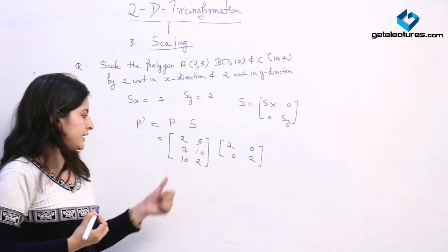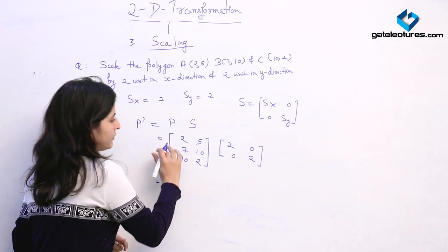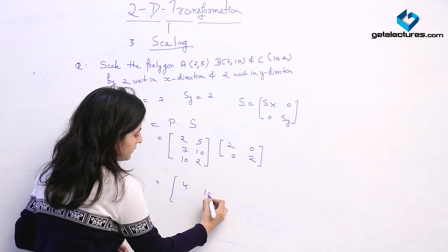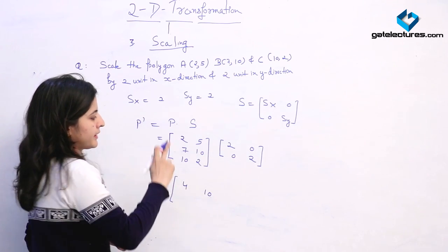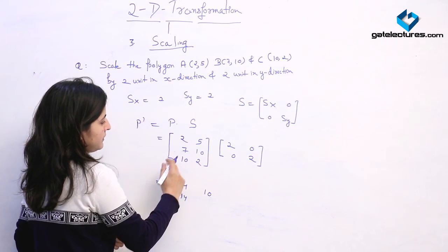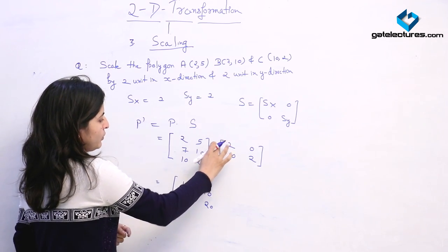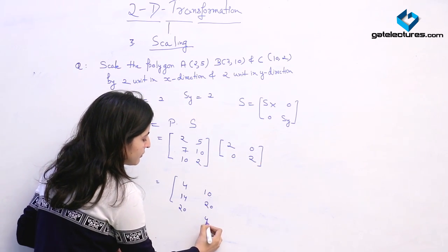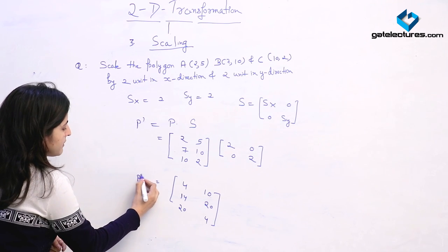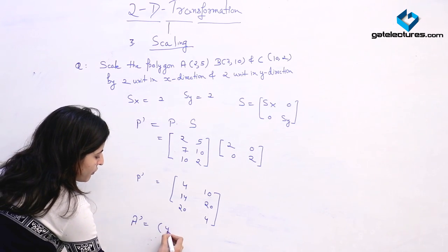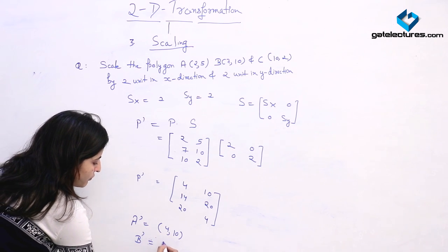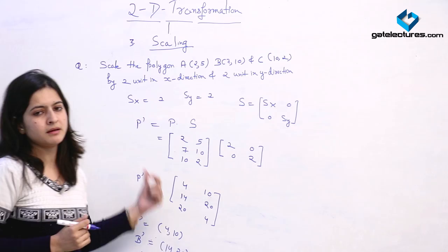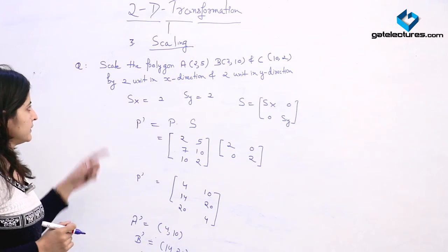We solve by matrix multiplication: first row times first column gives us A dash equals (4, 10). Second row gives B dash equals (14, 20). For C dash: 10 multiplied by 2 gives 20, and 2 multiplied by 2 gives 4, so C dash equals (20, 4). So the new scaled coordinates are A dash = (4,10), B dash = (14,20), and C dash = (20,4). This is the example of scaling.